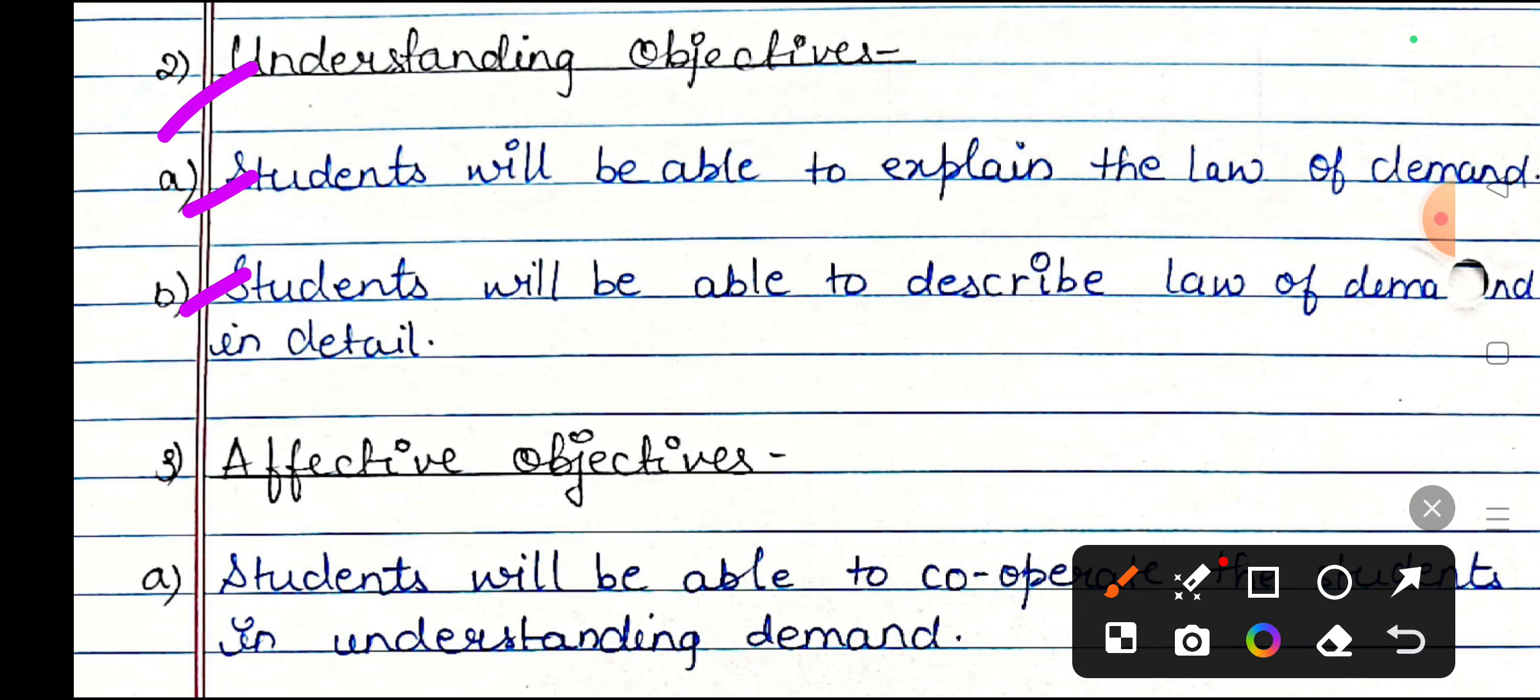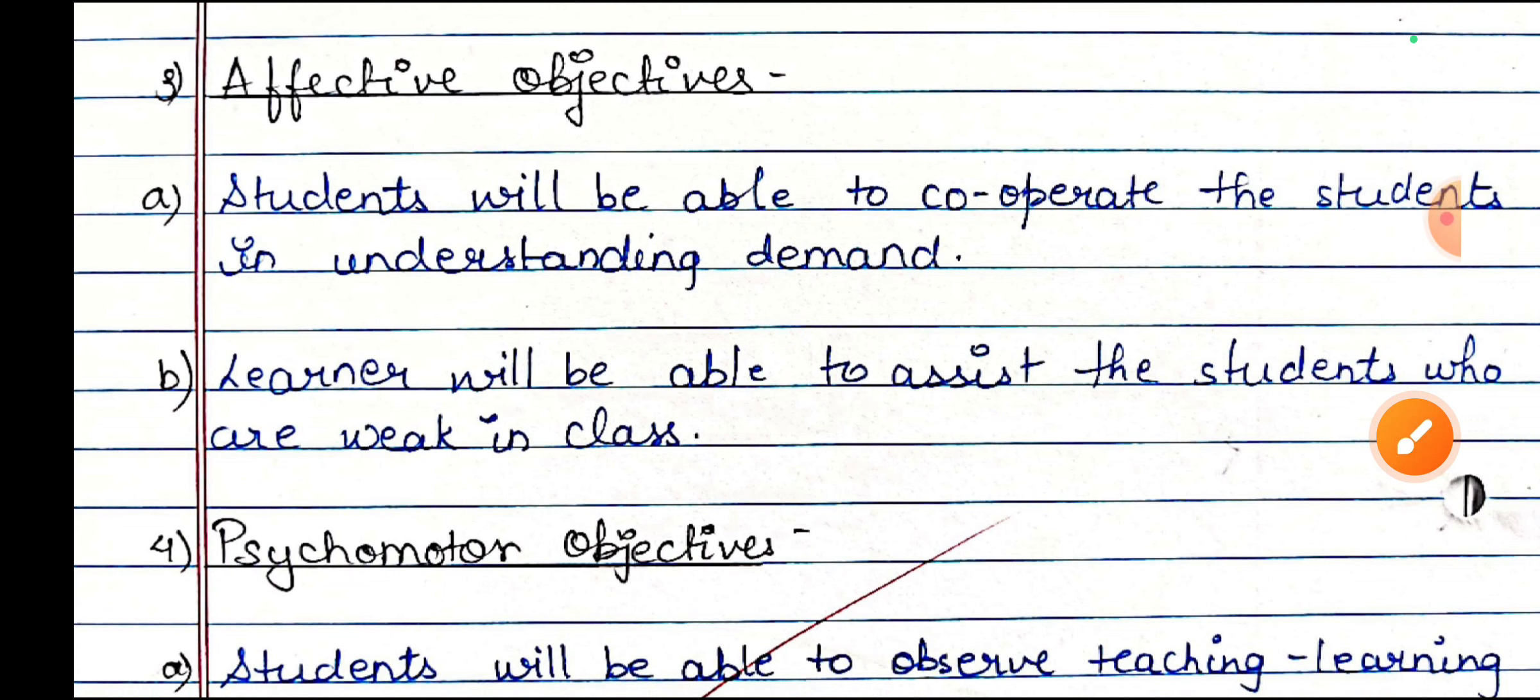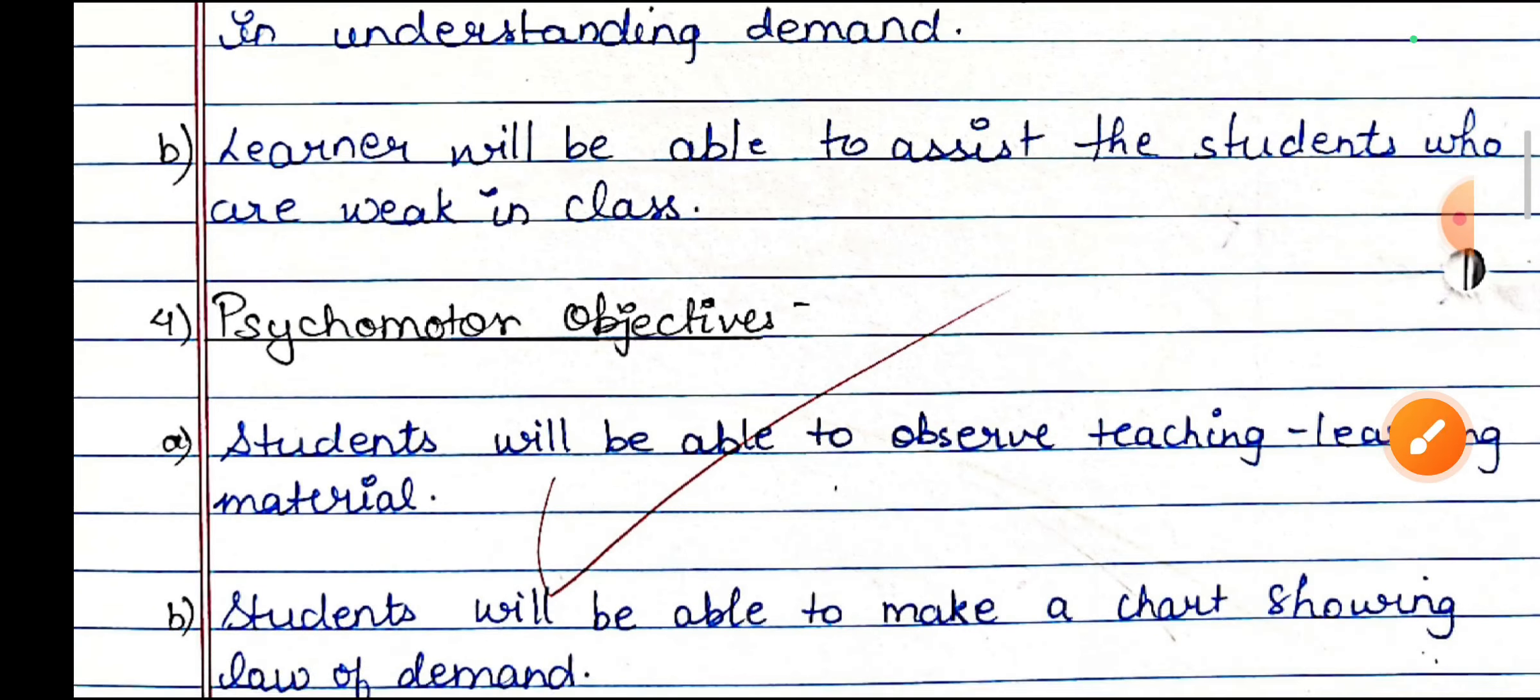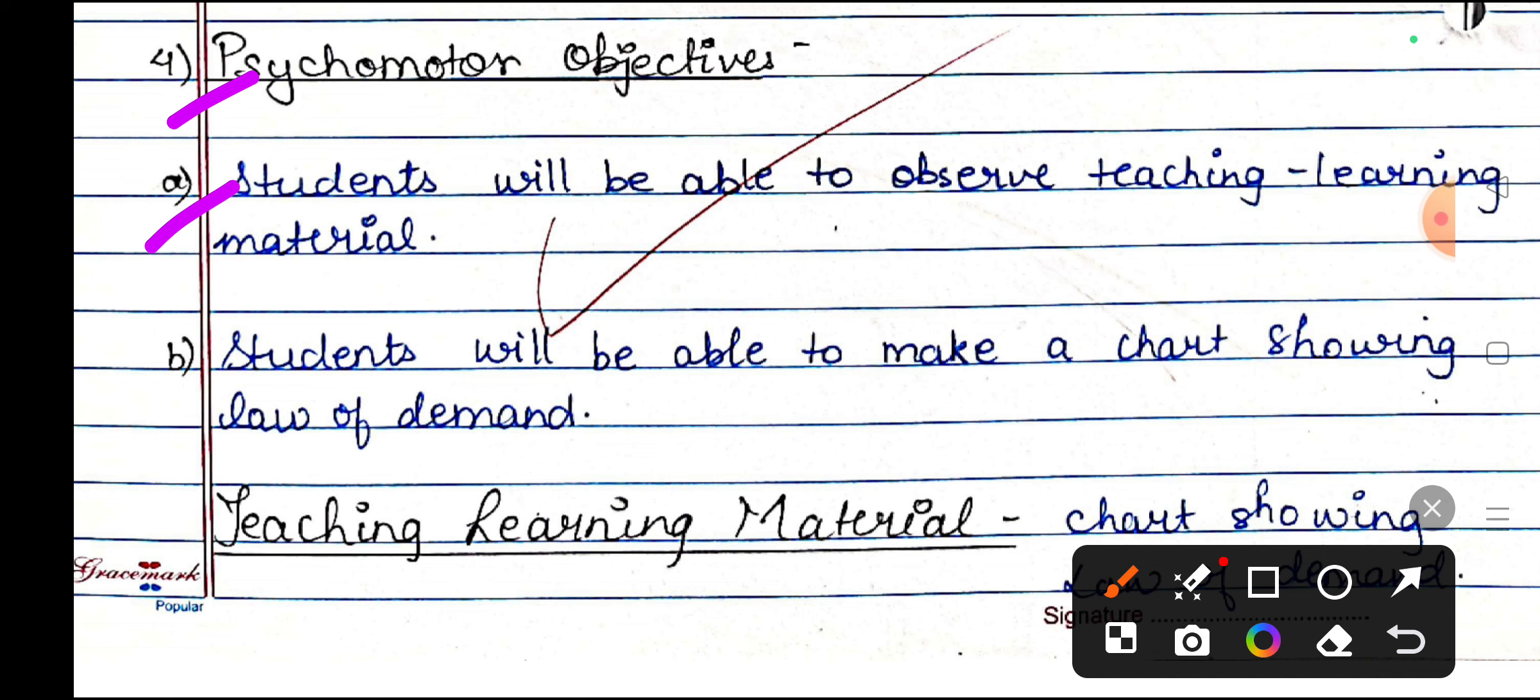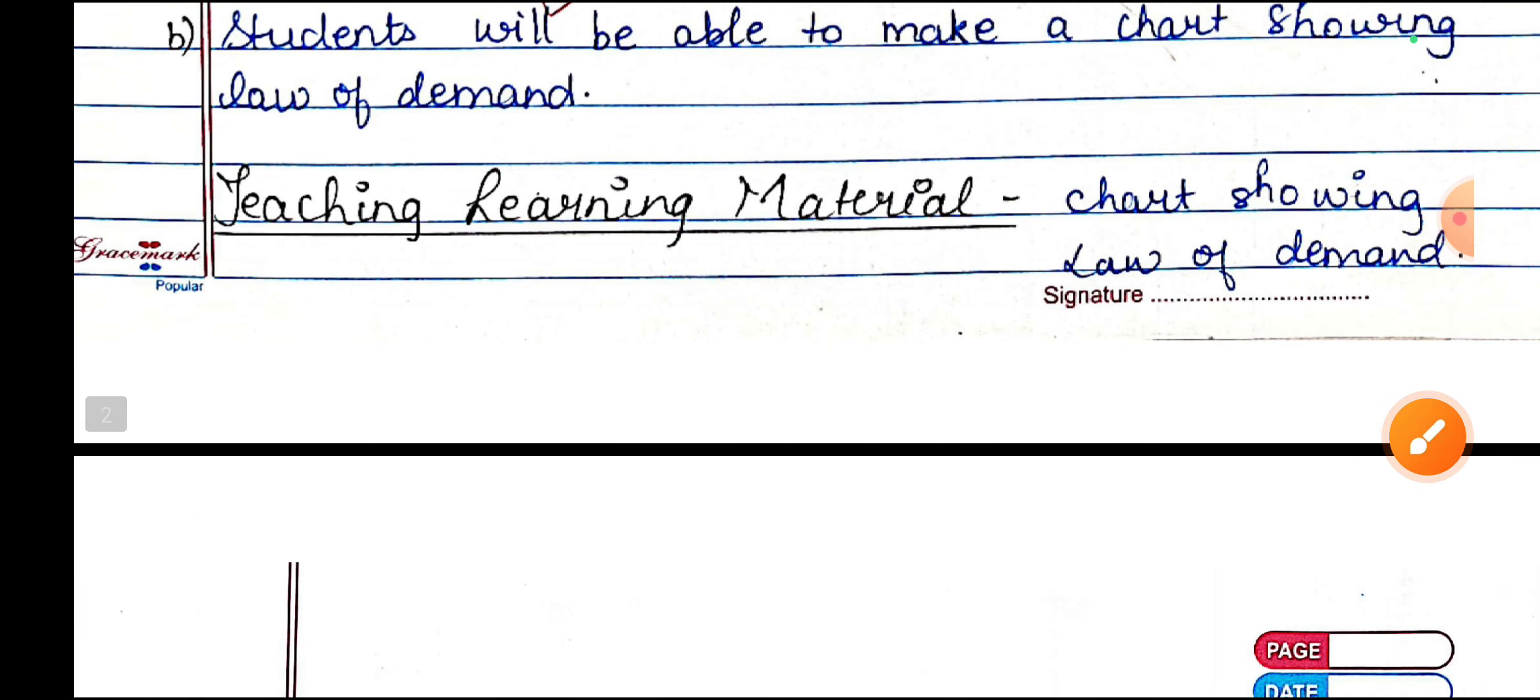You will write the next points. After that, you will find the next points, affective objectives, sub points, and psychomotor objectives.